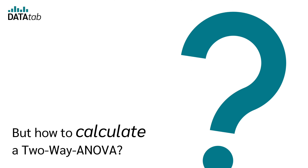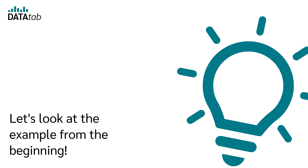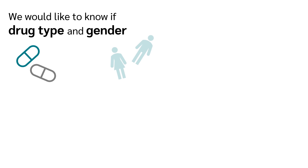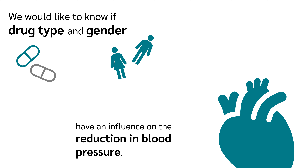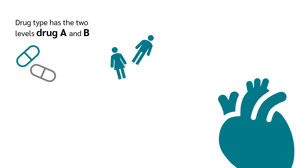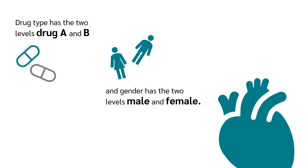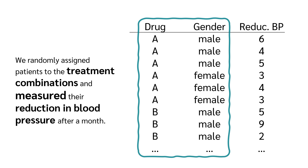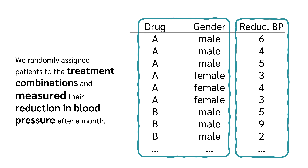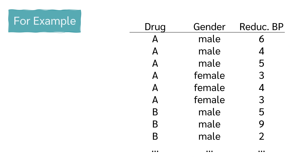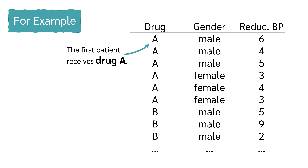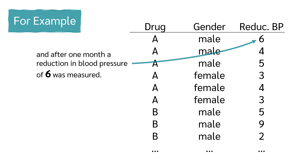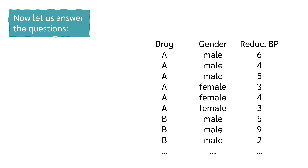How do we calculate a two-way ANOVA? We would like to know if drug type and gender have an influence on the reduction in blood pressure. Drug type has two levels — drug A and B — and gender has two levels — male and female. We randomly assigned patients to the treatment combinations and measured the reduction in blood pressure after a month. For example, the first patient receives drug A, is male, and after one month a reduction in blood pressure of 6 was measured.